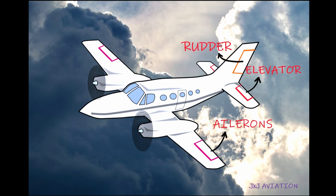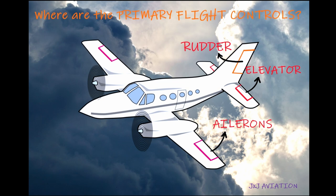Where are the primary flight controls located? The elevator is located on the trailing edge of the horizontal stabilizer. The ailerons are located on the trailing edge of the wing, and the rudder is located on the trailing edge of the vertical stabilizer.